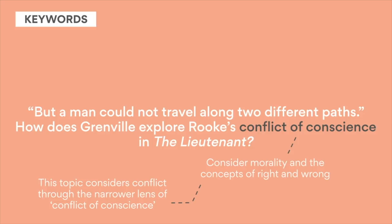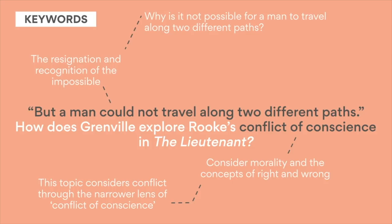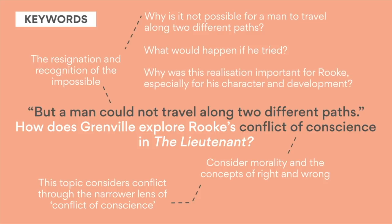In your discussion, relevance to the prompt is crucial in ensuring you're actually answering the question. Now let's analyze the quote: 'But a man could not travel along two different paths.' This quote alludes to Rook's realization regarding the reality of his identity — not only as Tagaran's friend or Kamara, but also as a soldier or Burra Walgao. The resignation and recognition of the impossible — for Rook to continue attempting to appease both sides without making critical decisions about who and what he ultimately valued more — is evident in this quote. Hence, this quote refers to the conflict of conscience he experiences and provides insight into both his character and conflict itself. Why is it not possible for a man to travel along two paths? What would happen if he tried? Why was this realization important for Rook's character and development? These are the kinds of questions that might give hints to how to tackle the prompt.